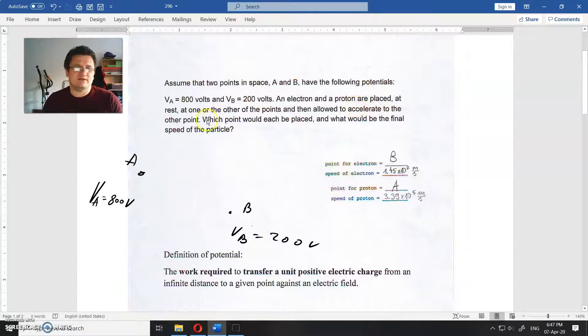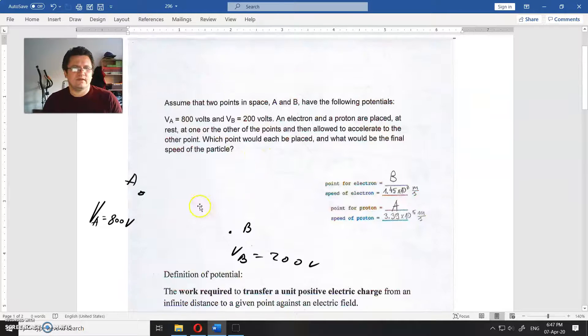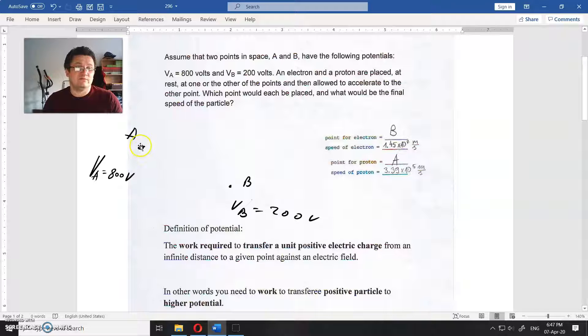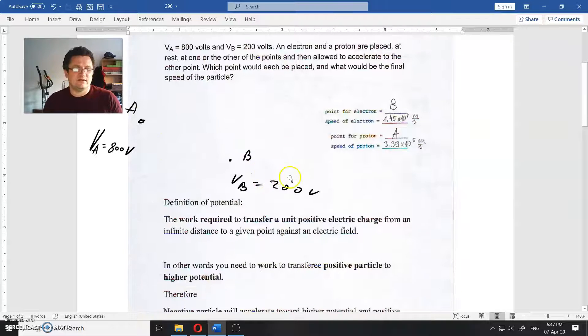An electron or proton are placed at rest at one or the other points and then allowed to accelerate to the other point. Which point would each be placed, and what would be the final speed of the particle? Assume that they could move only from point A to point B or vice versa.